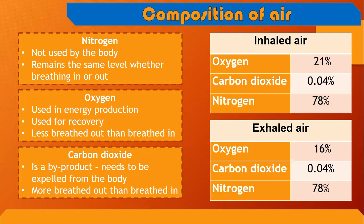The air around us is made up of three main gases: oxygen, nitrogen, and carbon dioxide, plus a small amount made up of a variety of other gases. The levels of these gases change depending on whether you are breathing in or breathing out. For example, we breathe in 78% nitrogen, 21% oxygen, and only 0.04% carbon dioxide.